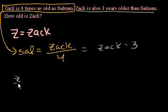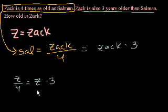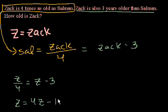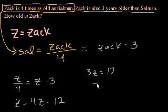We get Z over 4 is equal to Z minus 3. We can multiply both sides of this equation by 4, and we get Z is equal to 4Z minus 12. Skipping a couple of steps, I get 3Z is equal to 12. And Zach is equal to 4 years old.